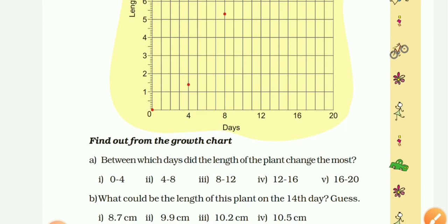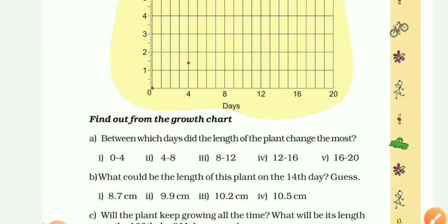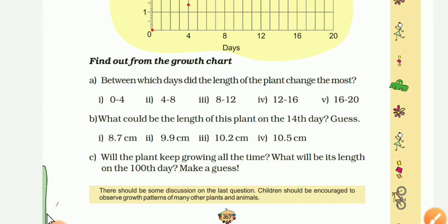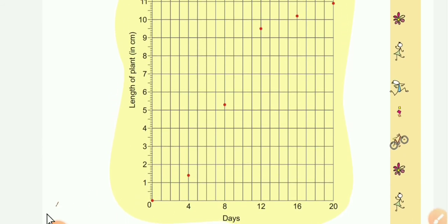Now next, what could be the length of this plant on the 14th day? Guess. In the table, in the chart, there is no list of 14th day, so it comes between which day? Yeah, 12th to 16th day. Let's see what is the length between 12th to 16th day.